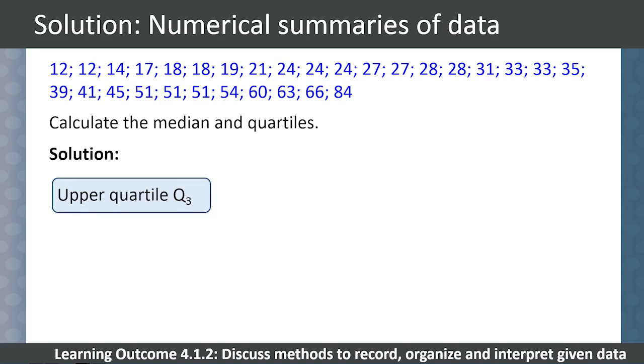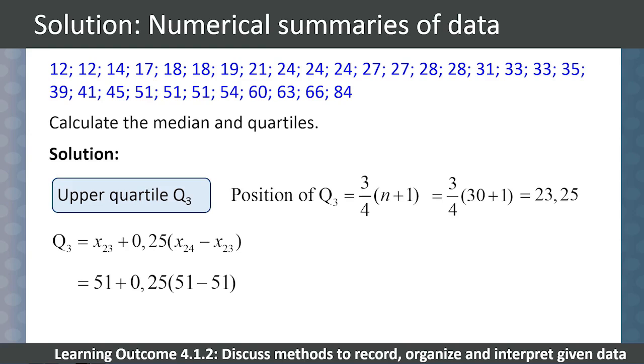For our upper quartile Q3. The position of Q3 is given by 3/4 times (n+1). n is 30, so the position of Q3 is 23.25. So our value for the upper quartile is calculated as the 23rd value plus a quarter of the 24th value less the 23rd value, which gives us 51 plus 0.25 times (51 minus 51). So the upper quartile is 51.